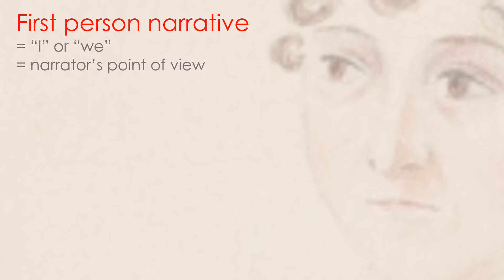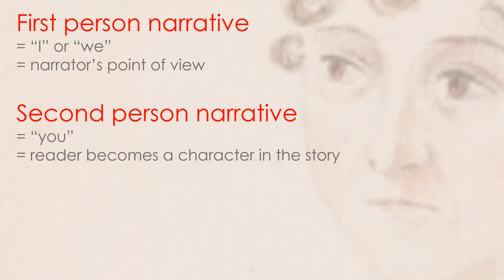We then have second person narrative, which uses 'you.' In essence, the reader becomes a character in the story, or stands in the place of a character. It's not a technique used very often, particularly in full-length novels, because over a long period of time it can become a bit unwieldy and clunky. But there are examples — Jay McInerney's novel Bright Lights, Big City from 1984 opens: 'It's 6 a.m. Do you know where you are?'